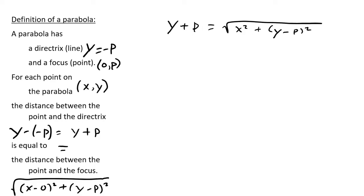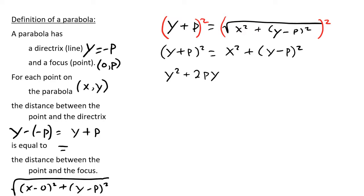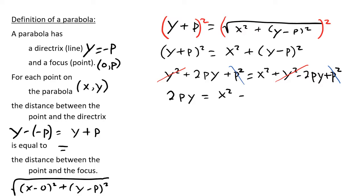That is the equation of a parabola, but it's not in a particularly nice form. To put it in a nicer form, we get rid of the radical by squaring both sides, then multiplying out the squares. On the left, that gives y squared plus 2py plus p squared. On the right, we have x squared plus y squared minus 2py plus p squared. A lot of things cancel: the y squared terms on both sides and the p squared terms on both sides. We're left with 2py equals x squared minus 2py. The 2py doesn't cancel because the signs aren't the same — positive 2py on the left, negative 2py on the right. Bringing those together gives us 4py equals x squared.